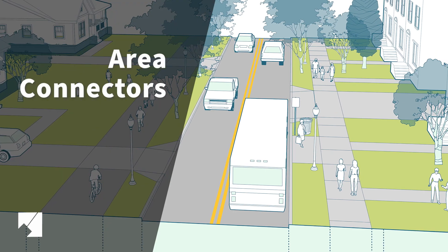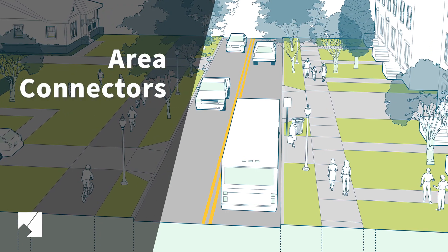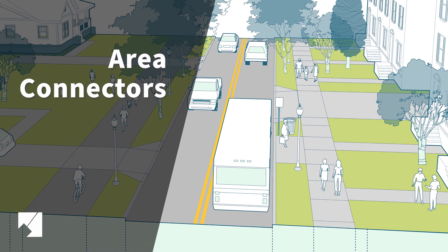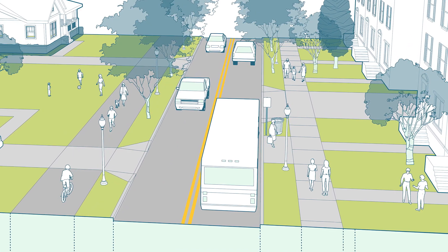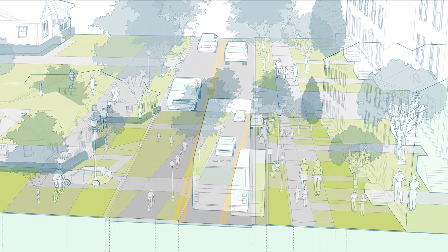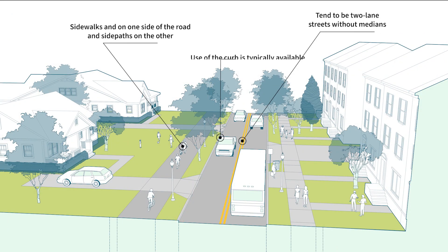Area connectors are two-lane through streets that typically traverse residential neighborhoods. These streets have moderate traffic volumes and transit service, and low to moderate pedestrian and bicycle activity. While the land uses are predominantly medium or low-intensity residential development, some businesses may be present.